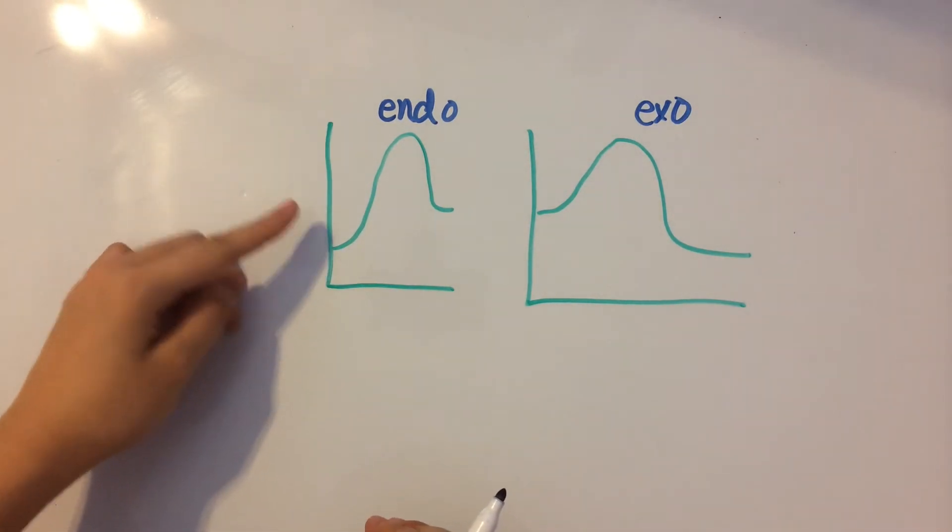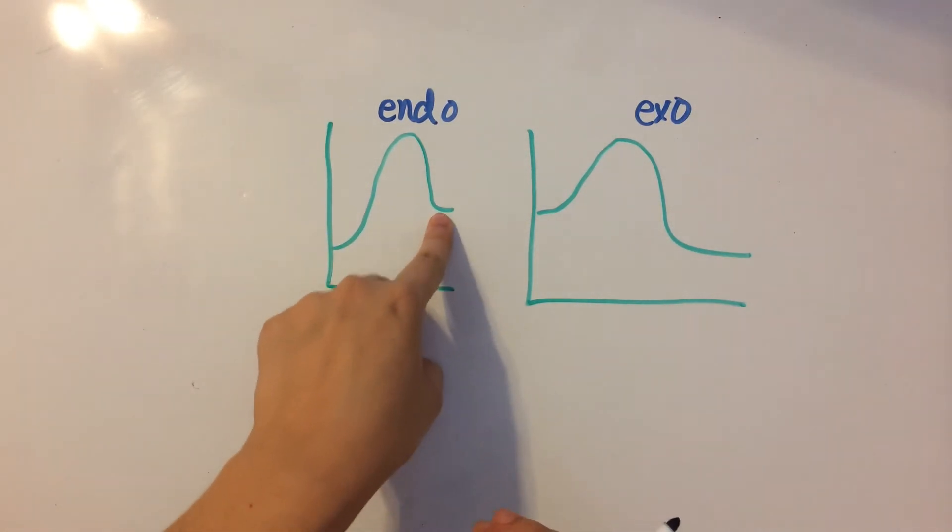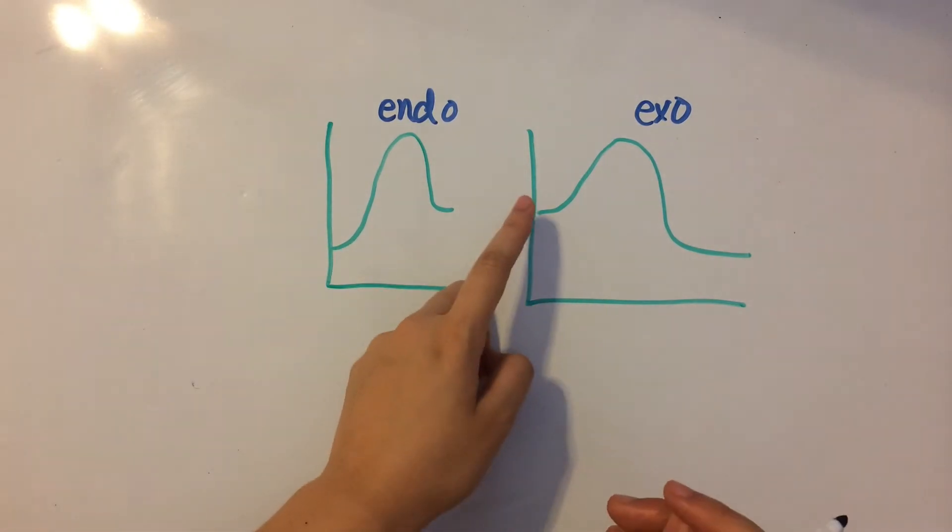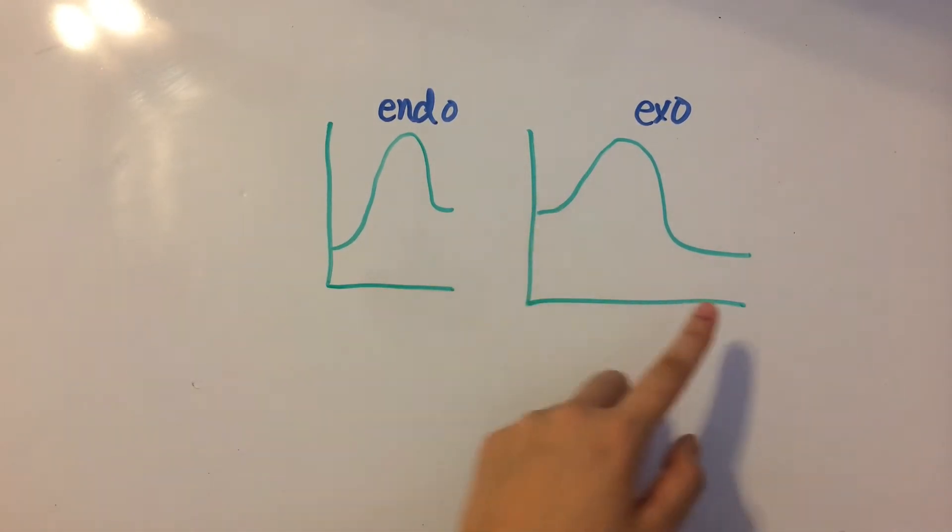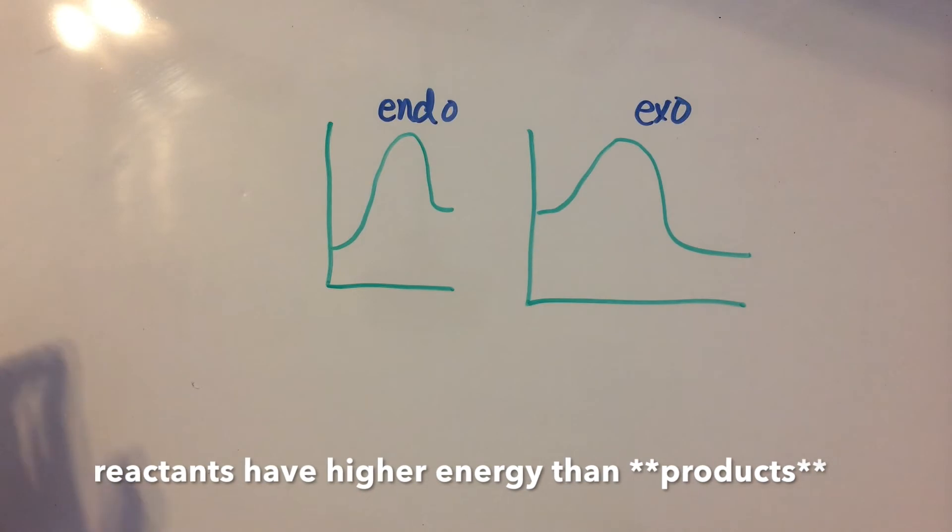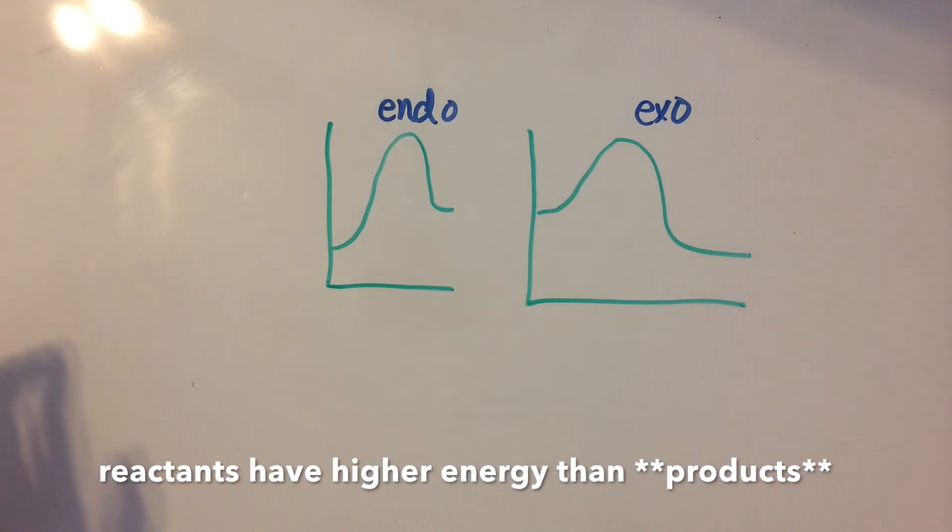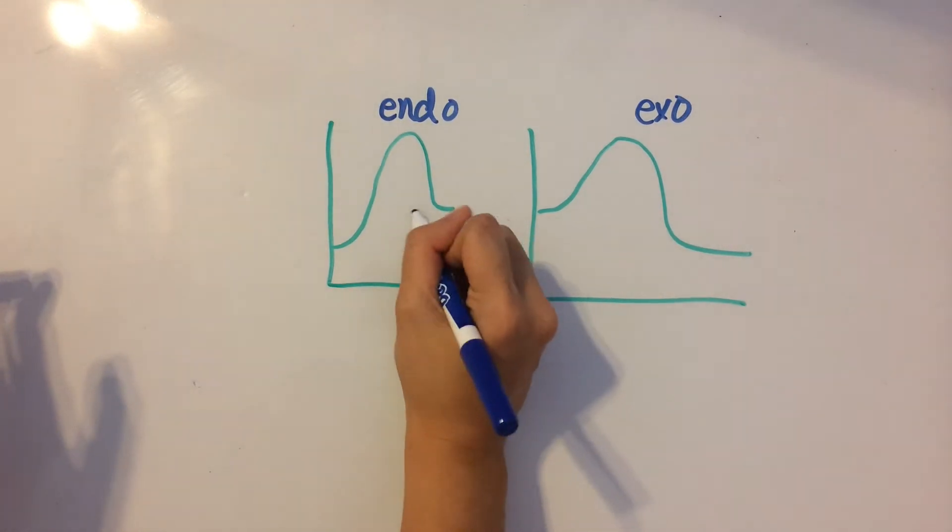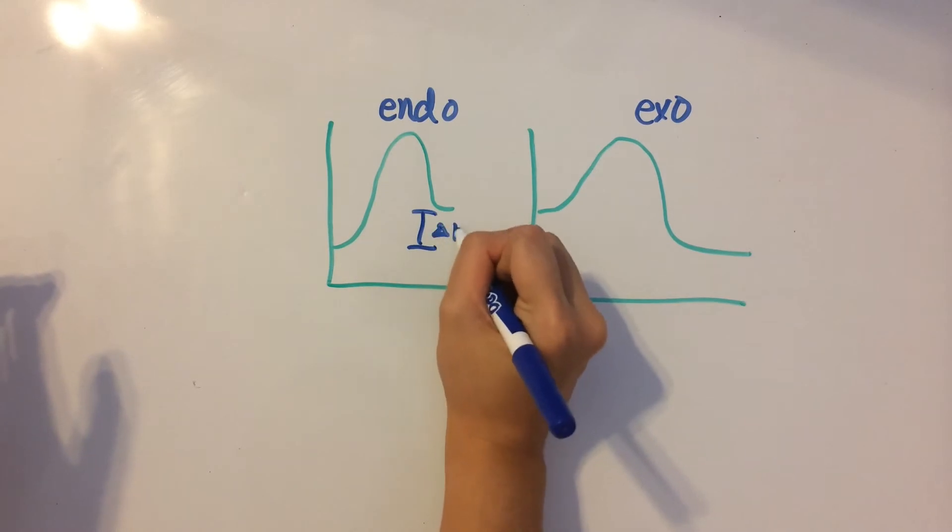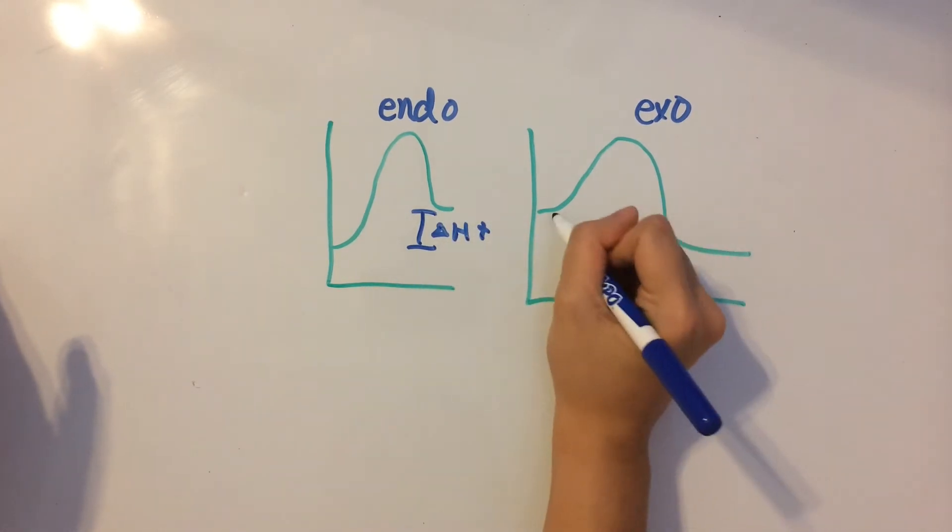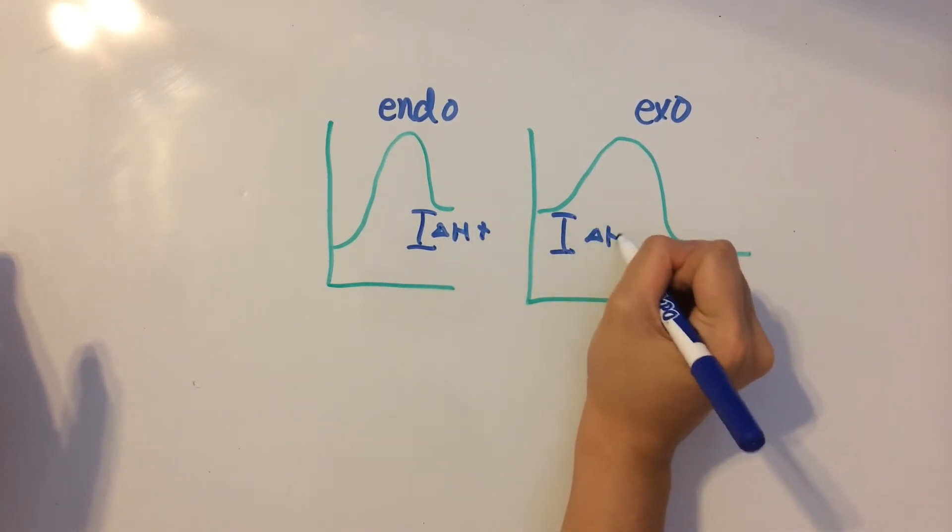The reactants have lower potential energy than the products in this one, and over here, the reactants have higher potential energy than the products. So delta H is going to be positive in this one, and over here, delta H will be negative.